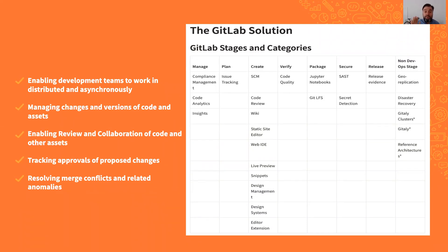What the market is expecting from a tool that solves this use case is a tool that enables their development teams to work in distributed mode and async. That allows them to manage changes and versions of code and assets, the ability to review and collaborate on code and those assets, the tracking of approvals of proposed changes, and the ability to resolve conflicts that may arise from the merge of those proposed changes. All those capabilities are solved partially by the categories on the right.